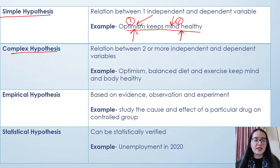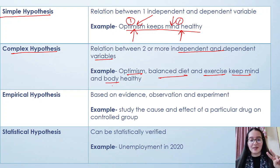Now complex hypothesis is the next level. It talks about relation between two or more independent and dependent variables. Let's take one example: Optimism - one independent variable; balanced diet - second independent variable; and exercise - third independent variable. All these three things keep our mind - one dependent variable - and body - second dependent variable - healthy. So here we have two or more dependent and independent variables. That is why it is called complex hypothesis, and it is the next level or next step ahead of simple hypothesis.